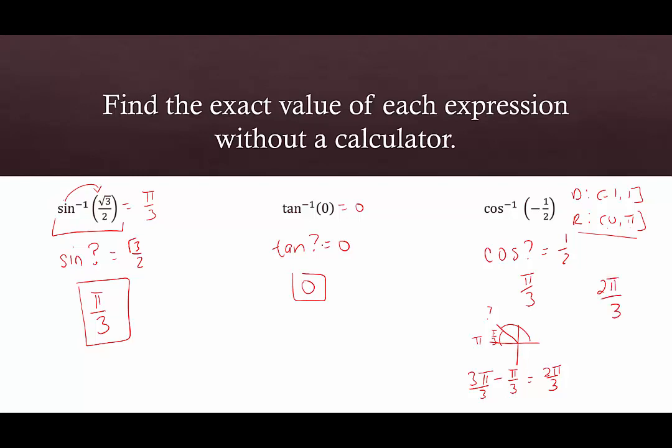We want to be really careful here. If we have a negative, we want to keep in mind what the allowable range is for these inverse functions. For sine and tangent, it deals with negative pi over 2 to pi over 2, but for cosine it's from 0 to pi. So when we know that cosine of pi over 3 is 1/2, we use that pi over 3 as the reference angle to figure out what provides a cosine value of negative 1/2. Cosine is negative in quadrants 2 and 3, and only quadrant 2 is within that allowable range.